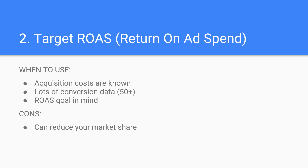Google Ads bidding option two: target return on ad spend. Target ROAS is a bidding strategy that confuses most people. Math is pretty important on this one — it's a bidding strategy where Google Ads will set your bids to maximize the conversion value based on the return on investment you want from your ad spend. This number is percentage based. Say you want to generate $10 for every $2 that you spend: $10 in sales divided by $2 in ad spend, times 100%, equals 500% target ROAS.